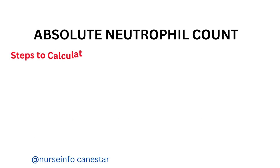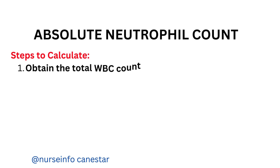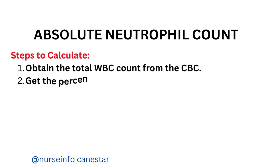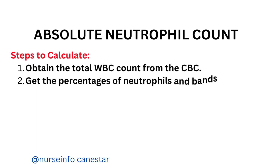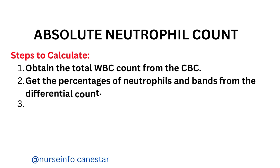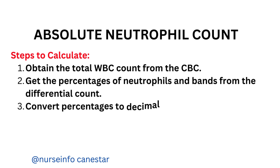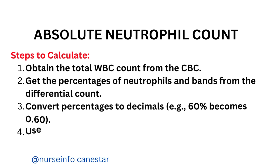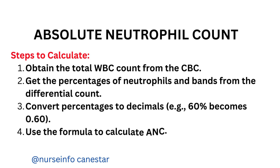Steps to Calculate: Obtain the total WBC count from the CBC. Get the percentages of neutrophils and bands from the differential count. Convert percentages to decimals — for example, 60% becomes 0.60. Then use the formula to calculate ANC.